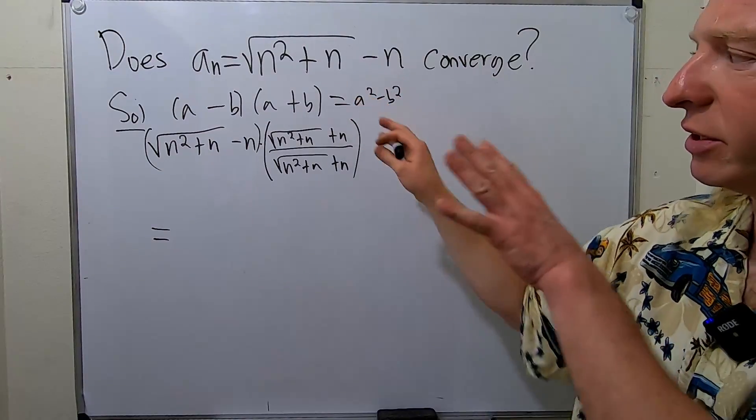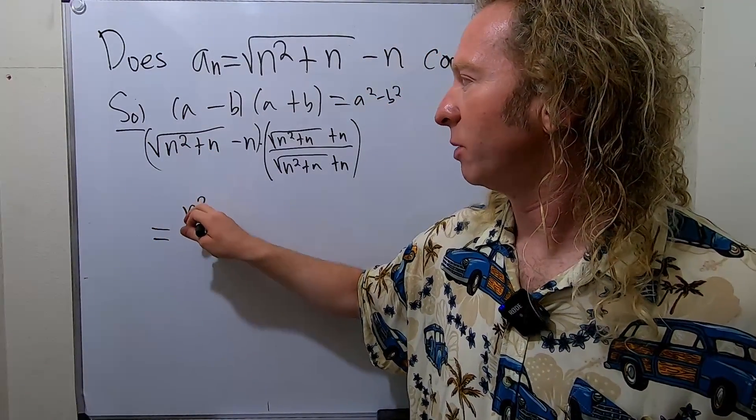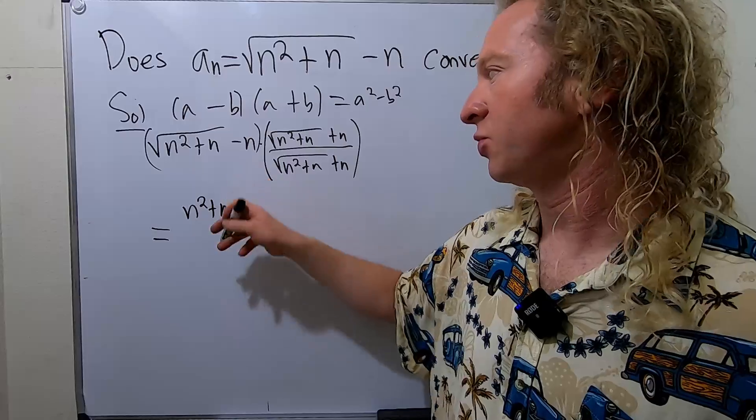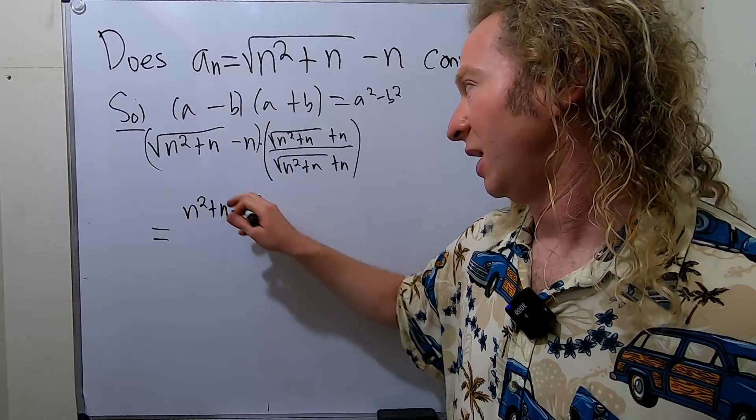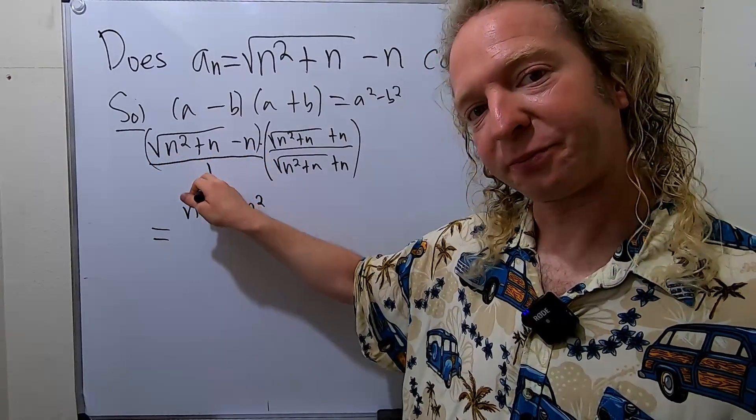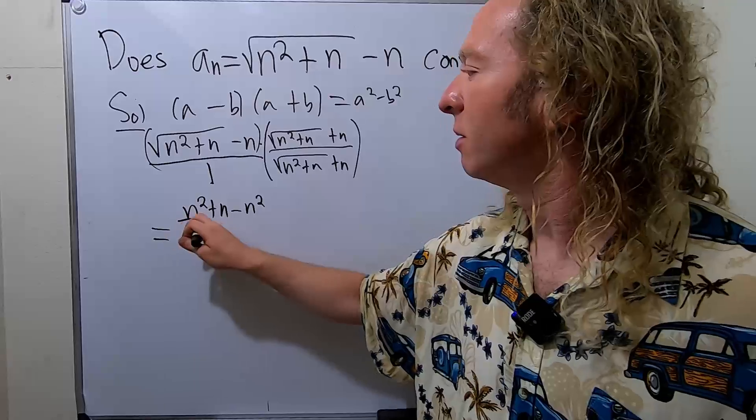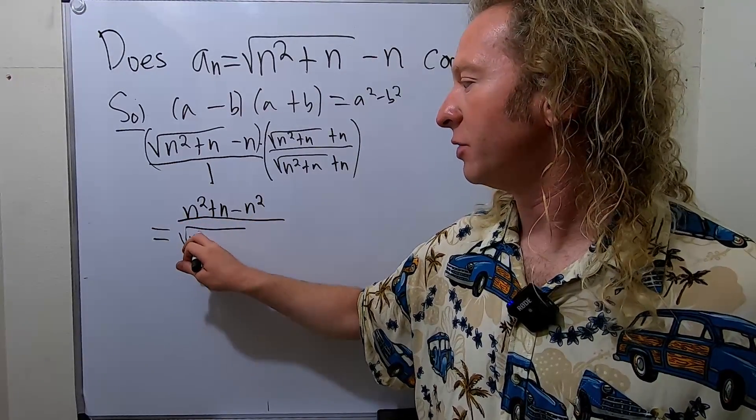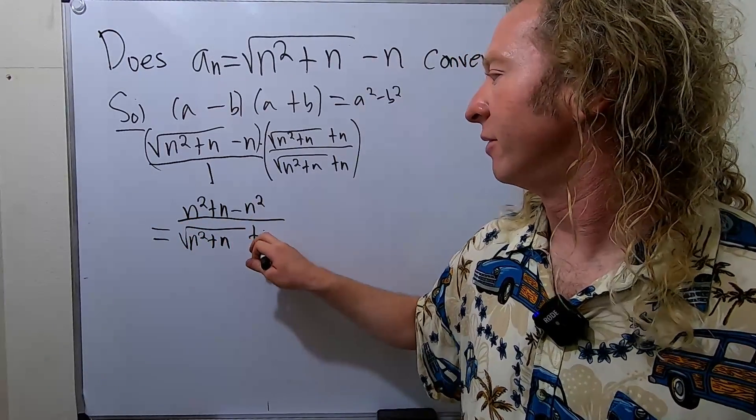This is a really important technique. When you square this one, you get n squared plus n. Square this one, you get n squared. And this is really over 1. So this times this comes over here, so you get square root of n squared plus n, then you have your n.